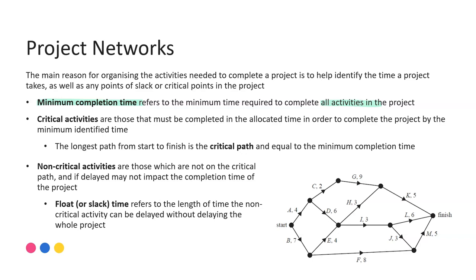The critical activities are those that must be completed in the allocated time in order to complete the project by that minimum completion time. That means there cannot be any delays - if the time taken to complete a critical activity is longer than the duration stated on the network or in the precedence table, then the overall completion time would also be delayed. The longest path from start to finish is what we call the critical path, and that is equal to that minimum completion time.